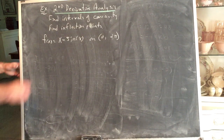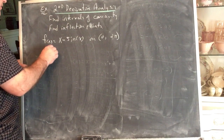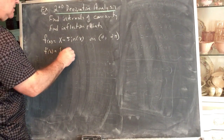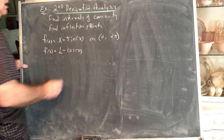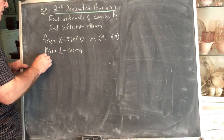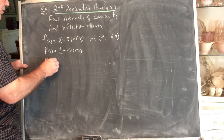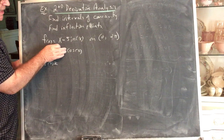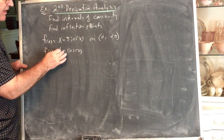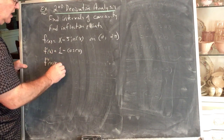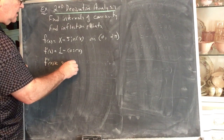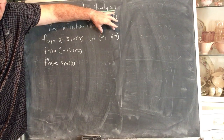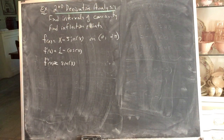Second derivative analysis requires, of course, the second derivative. The first derivative is 1 minus cosine. And the second derivative: the derivative of 1 is 0, the derivative of negative cosine is sine of x. Also, notice we're only working on the open interval from 0 to 2π.